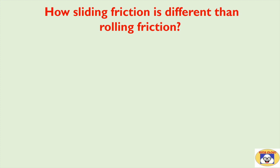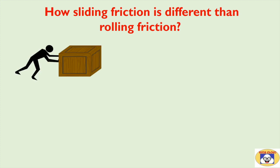How is sliding friction different from rolling friction? Sliding friction is always greater than rolling friction. Here is an example: a heavy wooden box is on the ground. If you want to move this box, you have to make it slide by giving a push at one side — that is sliding friction.